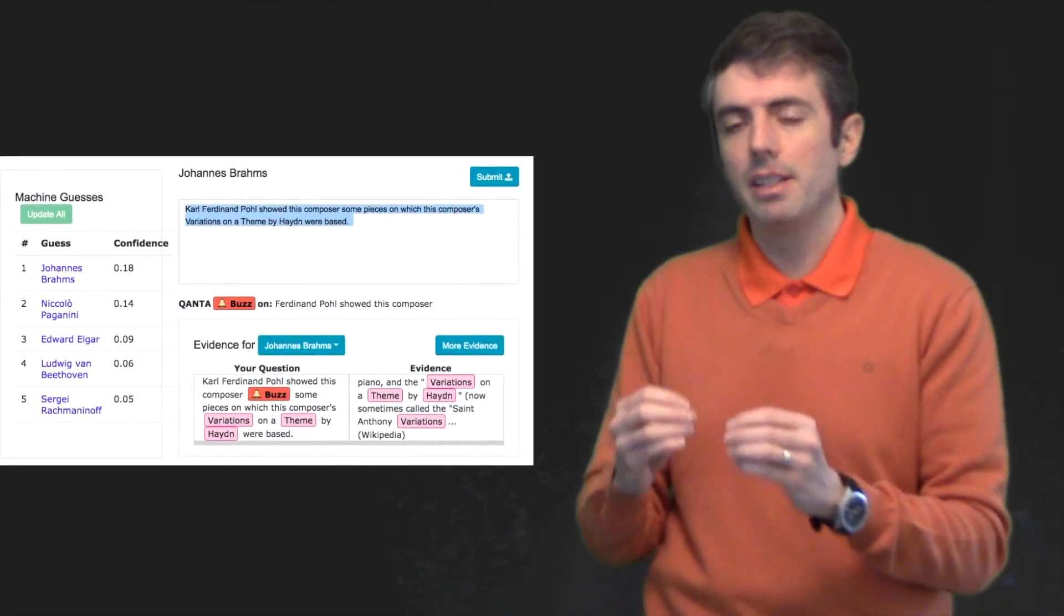And as they do, the computer comments on, oh, this is going to be too easy for a computer. Maybe you should think about rephrasing that. In exposing these shortcomings of algorithms, it will also let our human question writers create particularly fiendish questions that will stump computers.